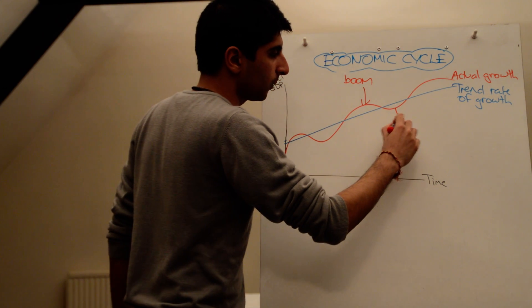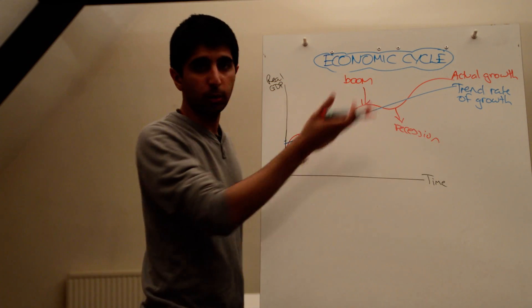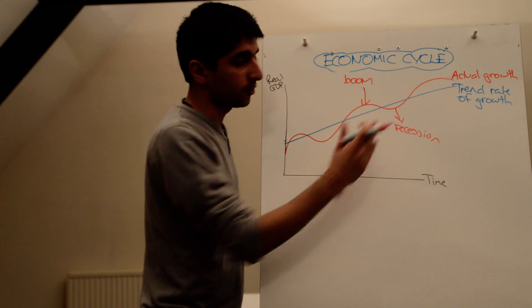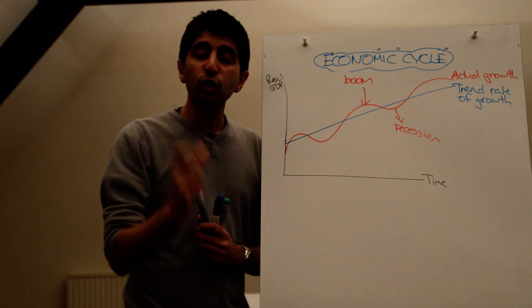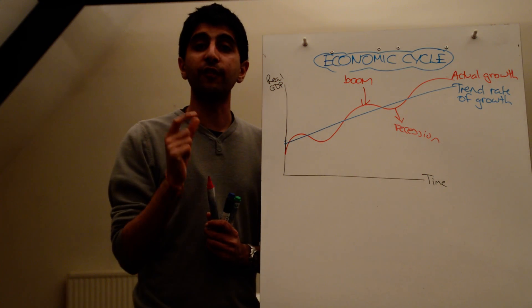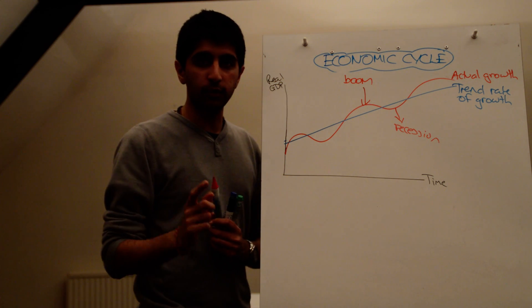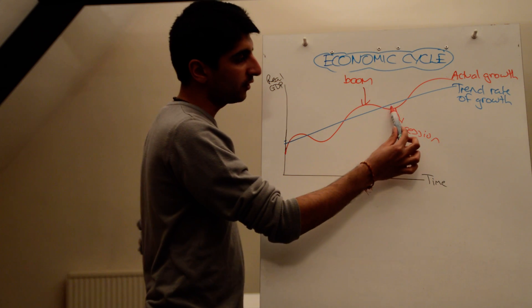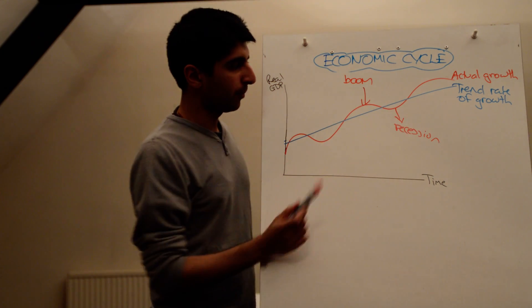The opposite of that, when we're at the trough of actual growth, the lowest point of actual growth at a point in time, we're experiencing a recession. A recession in economics is defined as two successive quarters of negative growth. That's very, very important. Two successive quarters of negative growth. So a recession, in this diagram, is at the trough of actual growth at a given point in time.